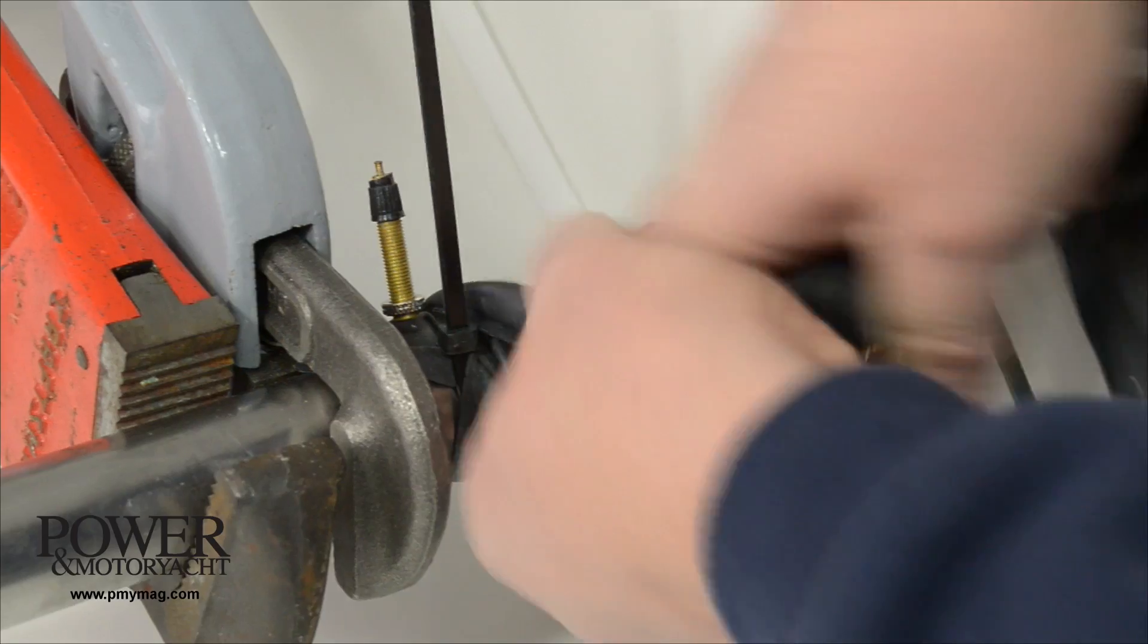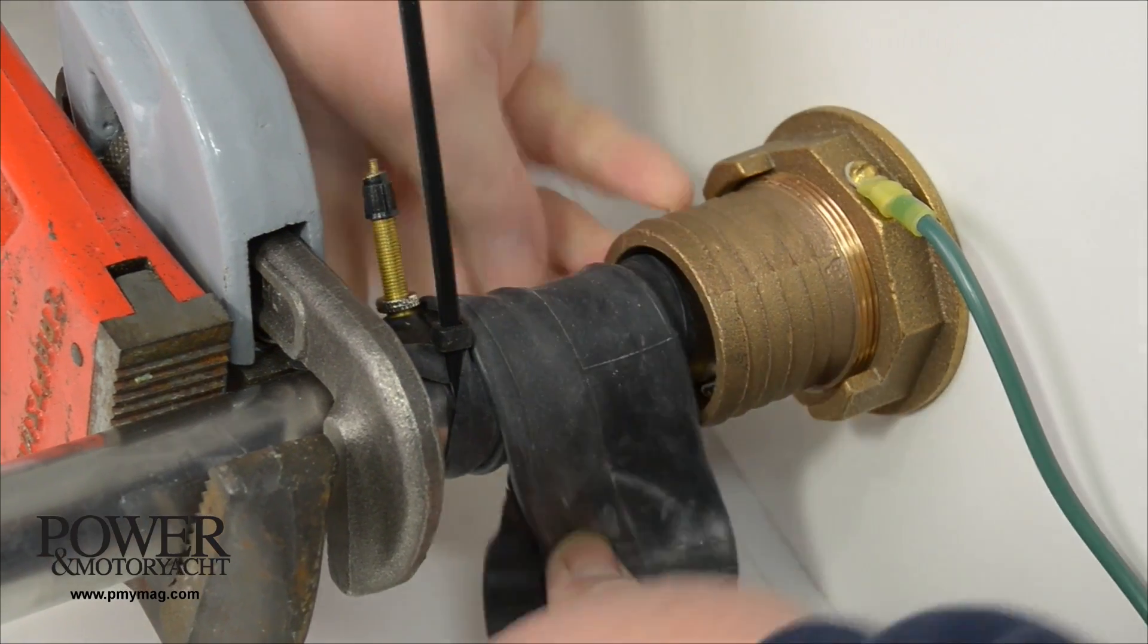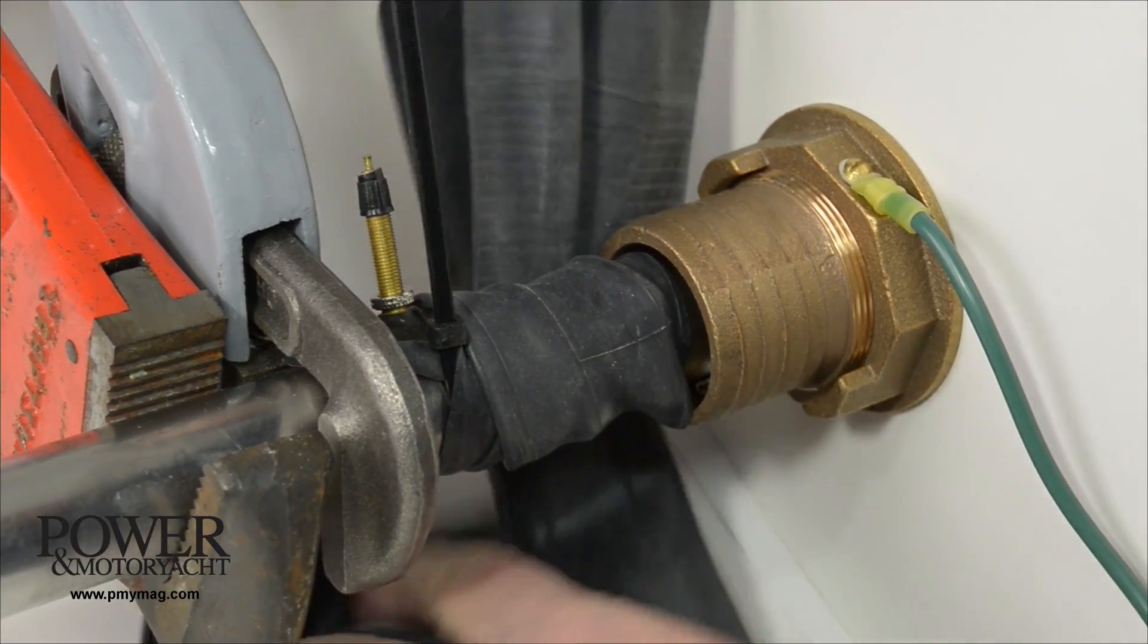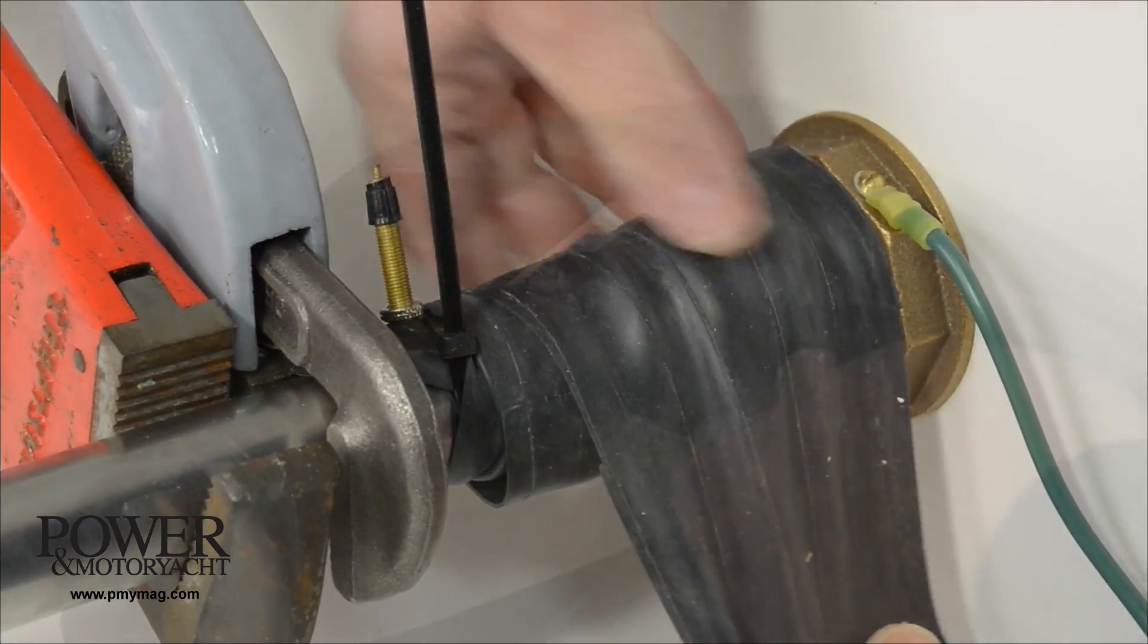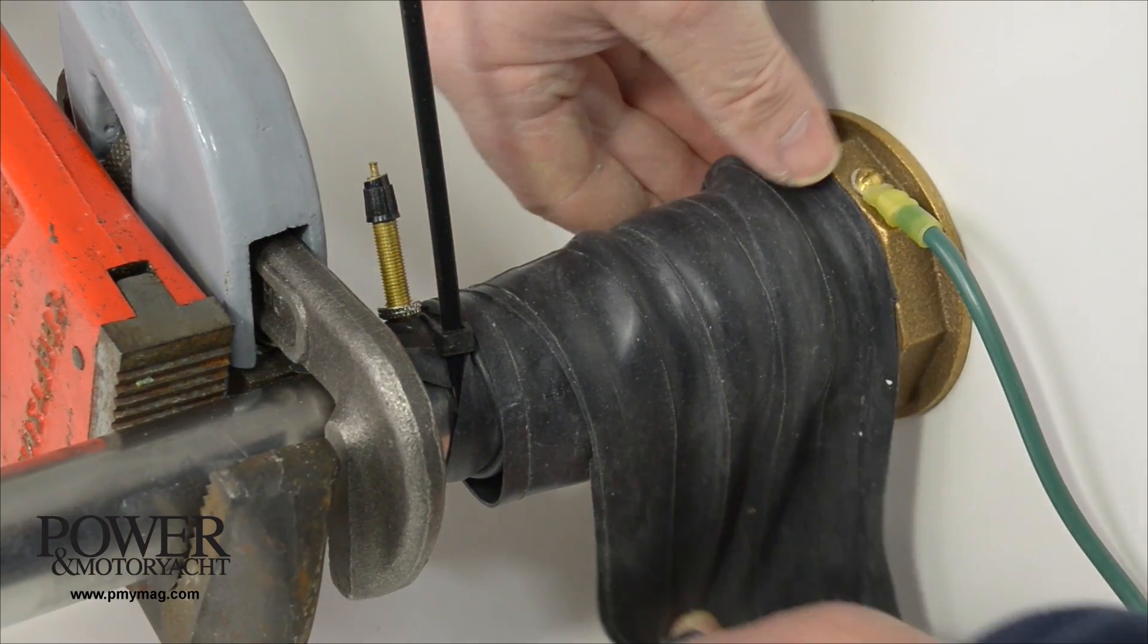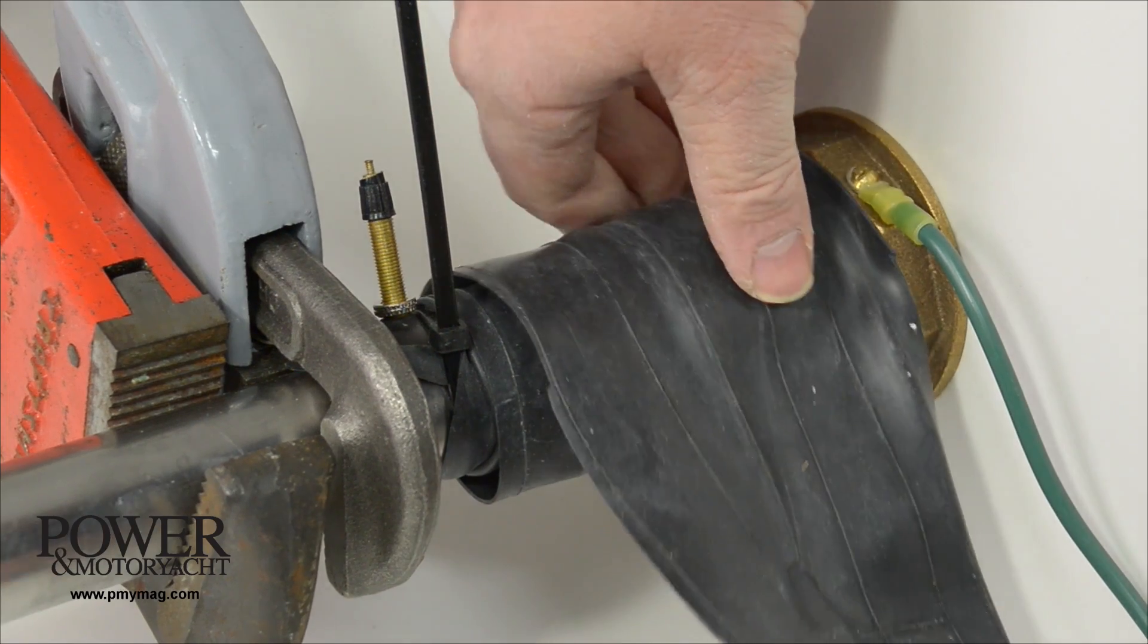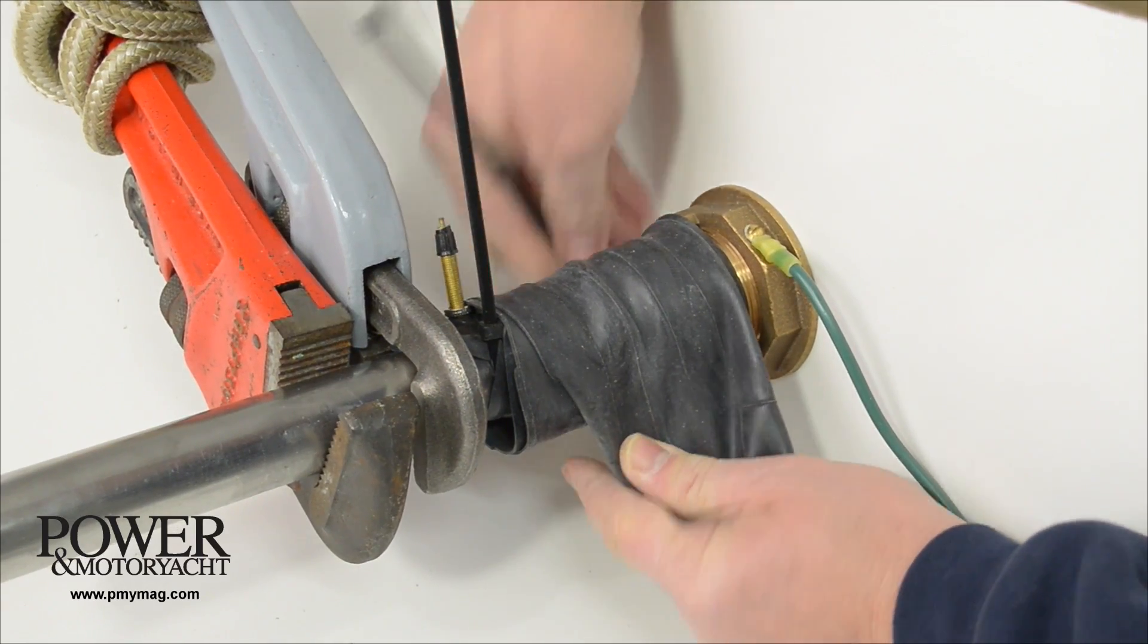Wrap that tightly around the shaft a few times and then extend over the stern tube like a bandage. Secure that with some tie wraps.